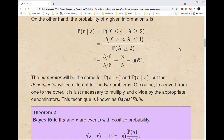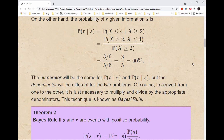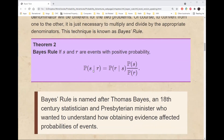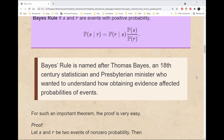So the numerator is going to be the same for the probability of S given R and the probability of R given S, but the denominator will be different. To convert from one to the other, it is necessary to multiply and divide by the appropriate denominators. This technique is known as Bayes' rule. If S and R are events with positive probability, then the probability of S given R equals the probability of R given S times the probability of S divided by the probability of R. Bayes' rule is named after its inventor, Thomas Bayes, an 18th-century statistician and Presbyterian minister who wanted to understand how obtaining evidence affected probabilities of events.